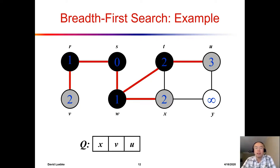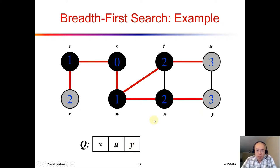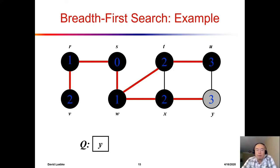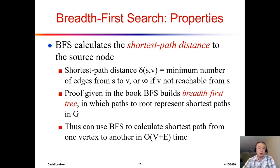We only want to visit white nodes and add them to the queue. Next we visit x — the only adjacent white node not yet discovered is y, so we put y in the queue and color x black. Eventually we visit v, u, and y, and there is nothing new to add for any of them. The queue becomes empty and all nodes have been colored black.